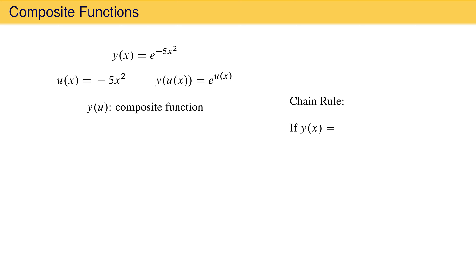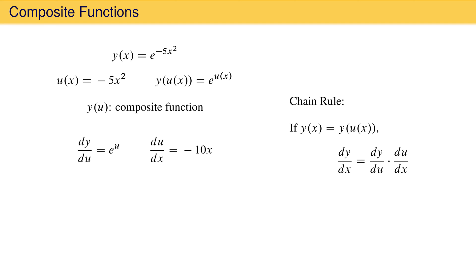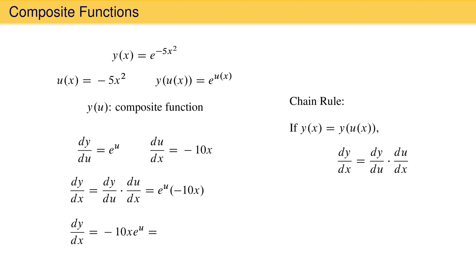The rule that helps us here is called the chain rule. If a function y of x is written as a composite function y as a function of u of x, then the derivative dy/dx is the derivative of y with respect to u times the derivative of u with respect to x. Returning to our example, the derivative of y with respect to u is e to the u, and the derivative of u with respect to x is minus 10x. According to the chain rule, the derivative of the original function is e to the u times negative 10x. Substituting u back in, we have negative 10x times e to the negative 5x squared.